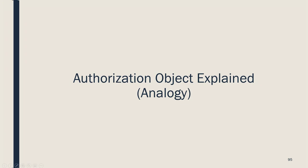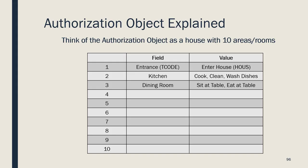We just finished the review of authorization objects, and I want to use an analogy to explain the concept in case you still have questions. Think of the authorization object as a house that can have up to 10 areas or rooms. Each area or room is the authorization field, and what you can do in each area or room is the field value. If you want to do anything in the house, you must first have the associated authorization field and value assigned to your role.